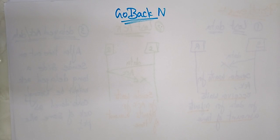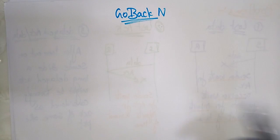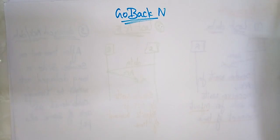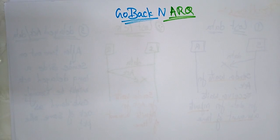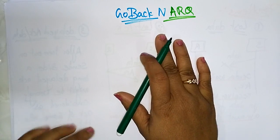Let's continue with error controlling mechanisms in the data link layer. In the previous video, I explained the sliding window protocol introduction with an example. Both Go-Back-N ARQ and Selective Repeat are sliding window protocols. Now let's see Go-Back-N ARQ in this video.